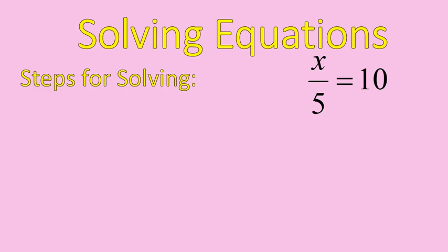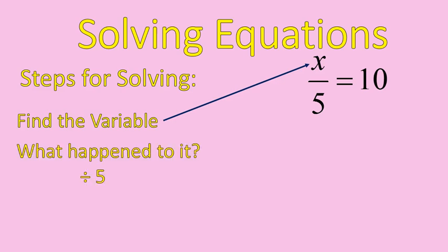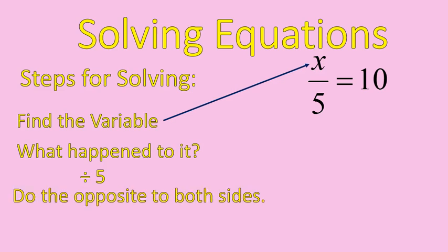The steps for solving equations are basically this. First, you find the variable. x is my variable. Now I ask myself, what is connected to x, or what happened to x, and we know that it was divided by 5. x divided by 5, that's how we read a fraction. So if x was divided by 5, I need to do the inverse operation, which is the opposite operation to both sides of the equation. So I'm going to multiply both sides of the equation times 5, and that will get the x completely by itself.